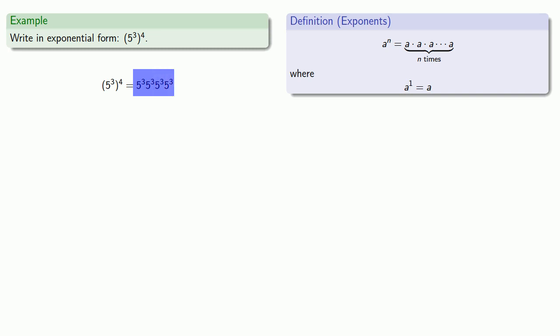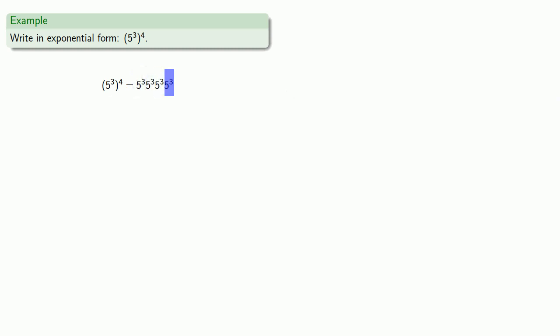So altogether I have 3, 6, 9, 12 copies of 5, and I can write that as 5 to power 12. Or you can use the theorem. But we didn't really need it.